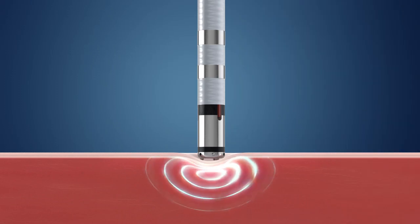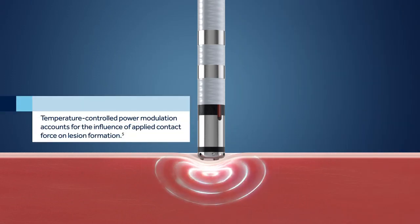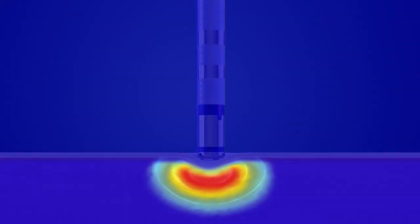Tissue surface temperature can serve as an indicator of tissue contact. While ablating with no or poor tissue contact, temperature may not rise to the target temperature. With firm tissue contact, the system will modulate power once the target temperature is achieved.